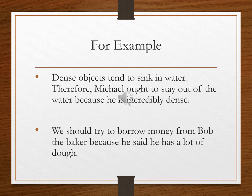Let's look at some more examples. Dense objects tend to sink in water; therefore Michael ought to stay out of the water because he's incredibly dense. The word 'dense' has multiple meanings. In the premise, 'dense' means heavy or having a lot of mass. In the conclusion, 'dense' means stubborn or slow to learn. We're using the term in a completely different way, and therefore the conclusion does not follow — it's a weak argument.